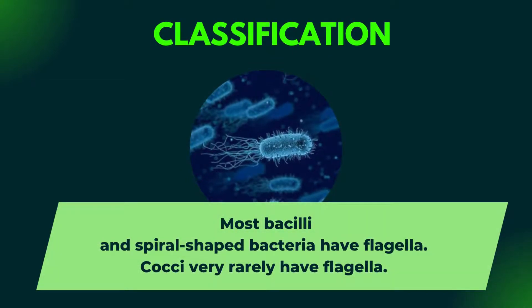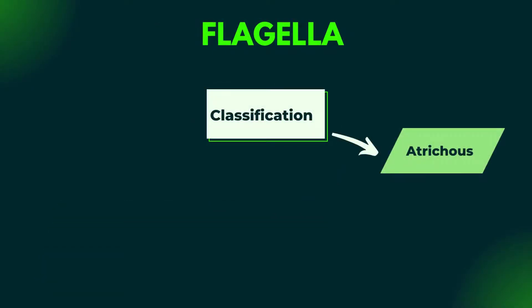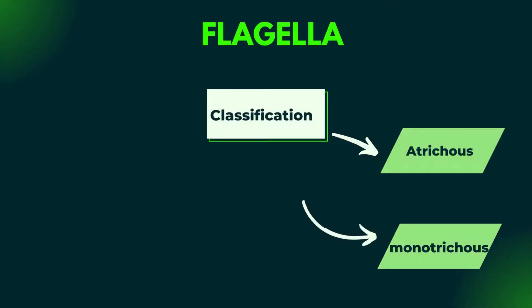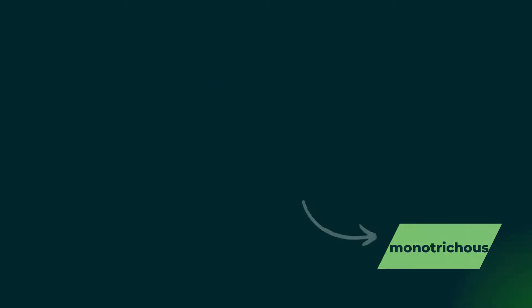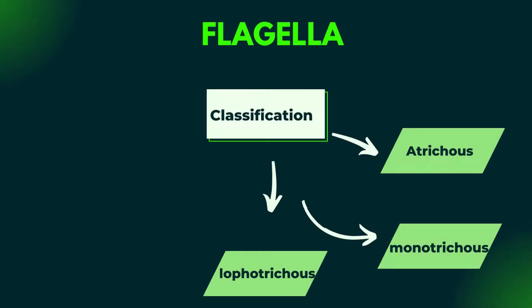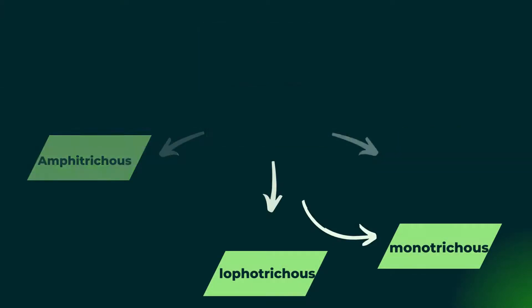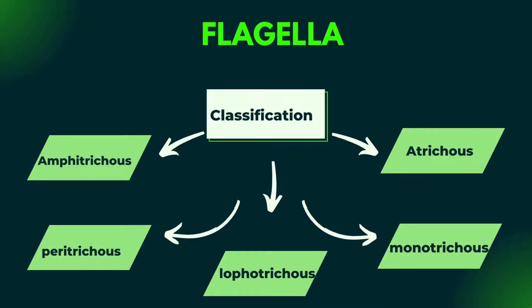Most bacilli and spiral-shaped bacteria have flagella. Cocci very rarely have flagella. On the basis of pattern, attachment, and number of flagella, we can classify bacteria into five taxonomy groups: the first is Atrichous, second is Monotrichous, third is Lophotrichous, fourth is Amphitrichous, and fifth is Peritrichous.